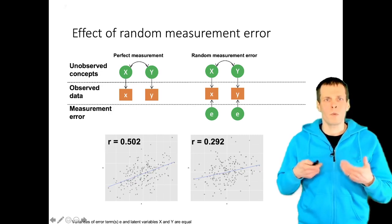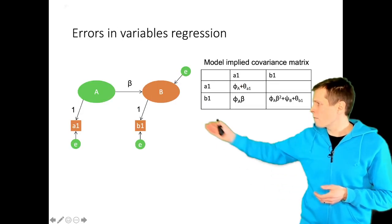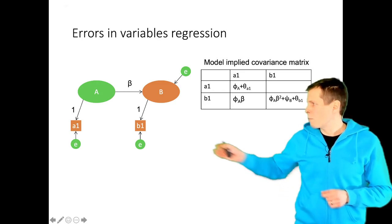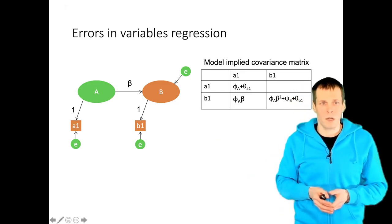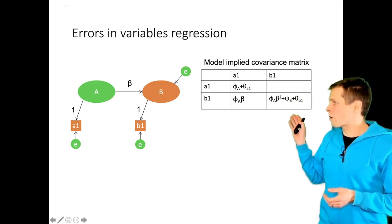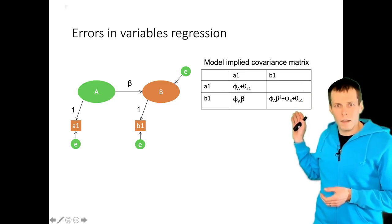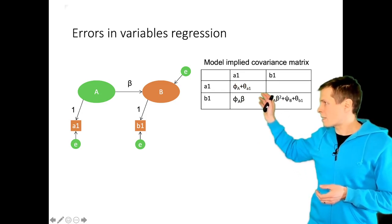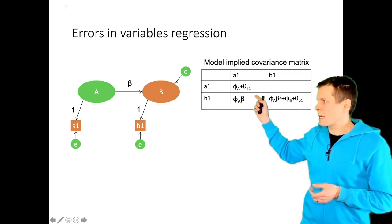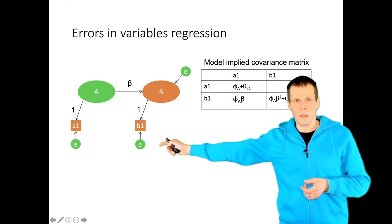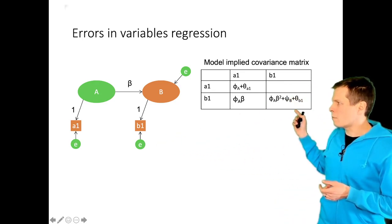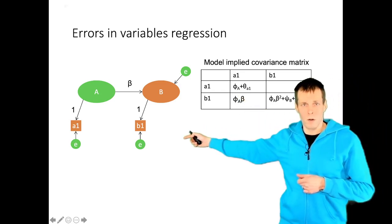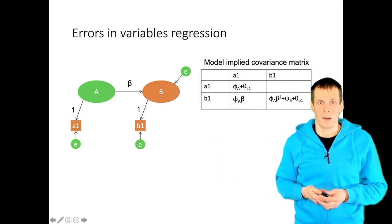How do we do errors in variables? If we have a latent variable model here, so we are interested in the correlation or regression between A and B, but we measure A1 and B1, which contain measurement error, then the model implied covariance matrix, importantly the diagonal elements, are affected by measurement error. So the variance of A1 is a bit larger than the variance of A because of this theta A1, the measurement error E, and then the variance of B1 is a bit higher than the variance of B because of theta 1 or the variance of this second indicator error term.